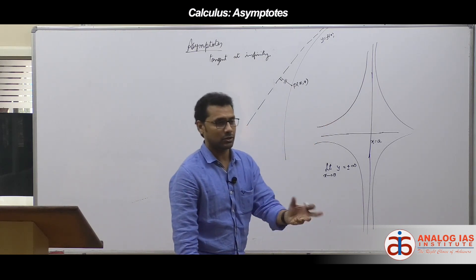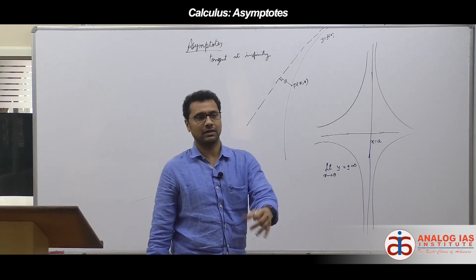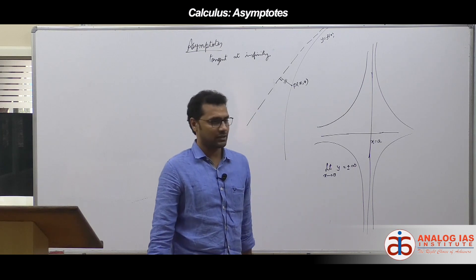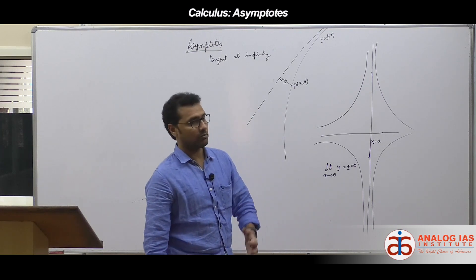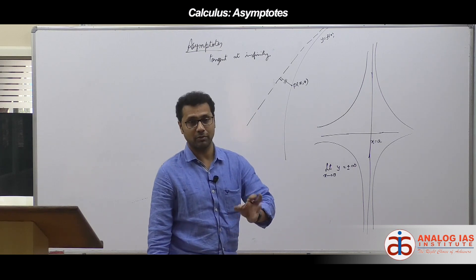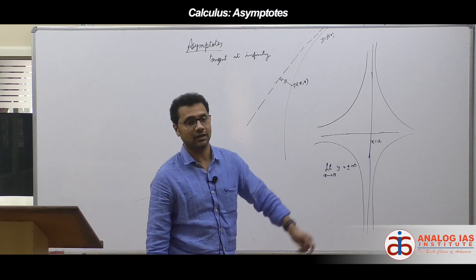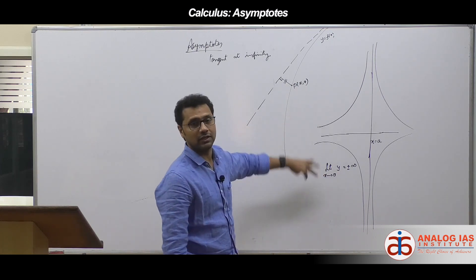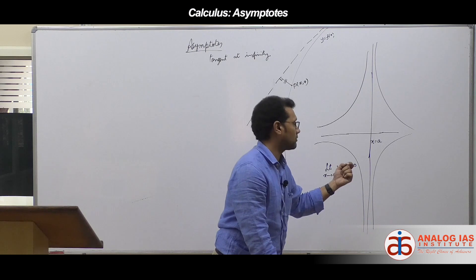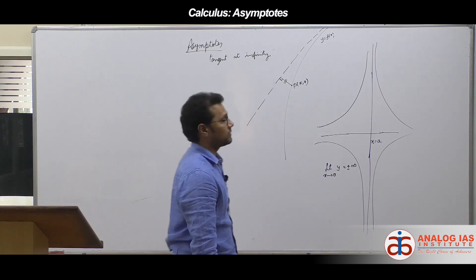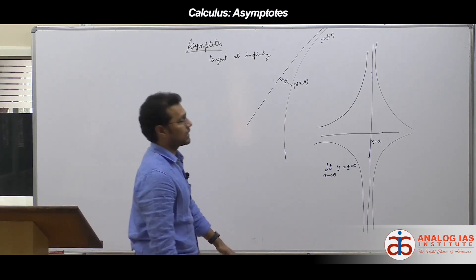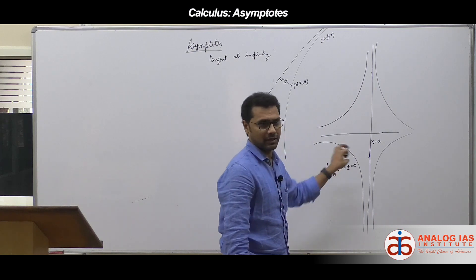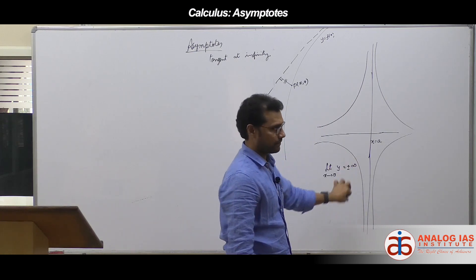The curve might pass through the origin, have certain intercepts on the x-axis or y-axis, or have tangents at the origin. All of these can be found easily to trace the curve. So one aspect of tracing a curve is asymptotes — vertical asymptotes in particular. Let me go a little bit deeper.